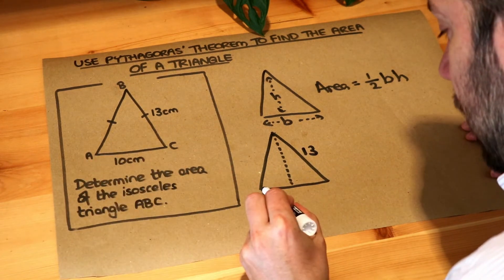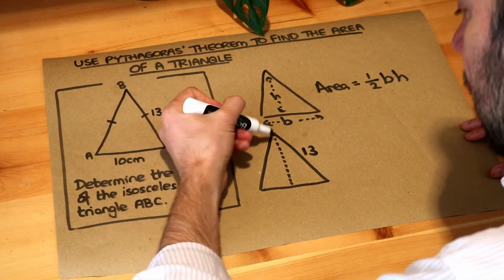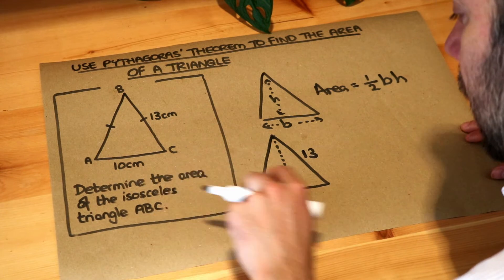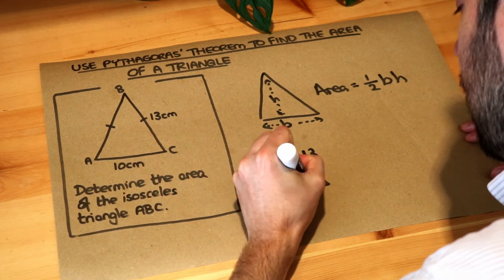if this length of the bottom is 10, because this is isosceles, that's actually a line of symmetry and therefore we've got 5 and 5. The 10 is equally split into two 5s.